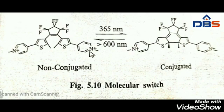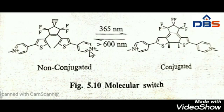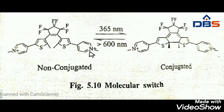Irradiating the molecule with light at 365 nanometers induces cyclization of the molecule. When it is cyclized, a fully conjugated path through the molecule becomes available and so the molecular switch is turned ON. The molecule can revert to its OFF state by irradiating it with light of greater than 600 nanometers. If this kind of molecular switch was introduced into a supramolecular system, a molecular electric circuit switched by photo irradiation could be constructed. This is the switching device.